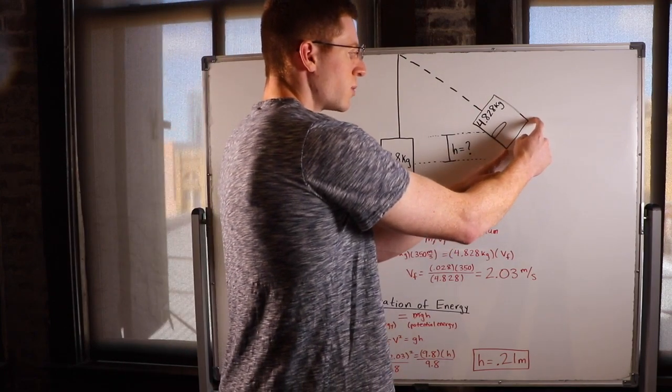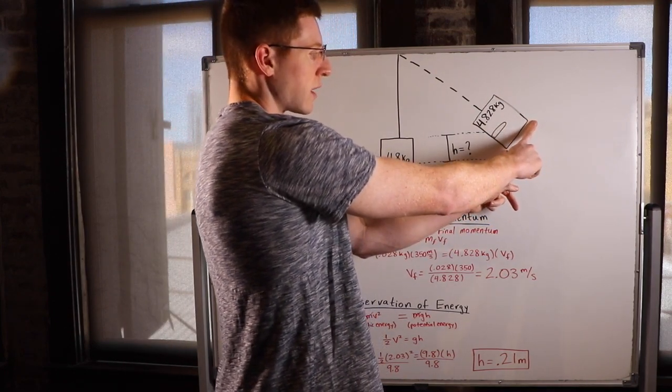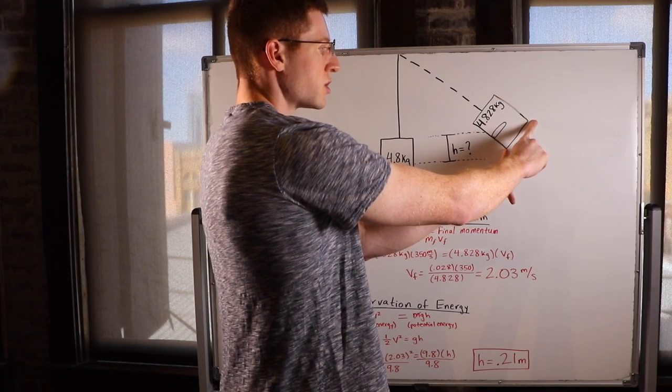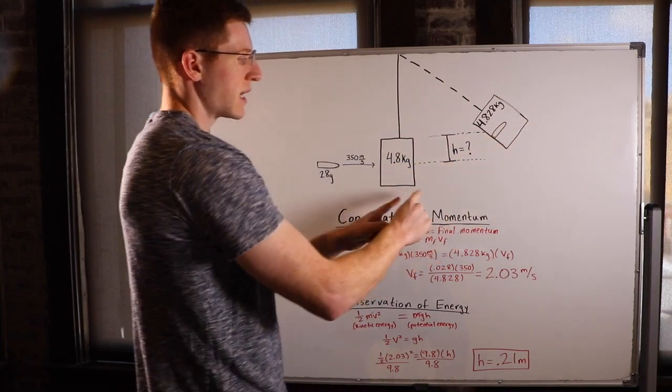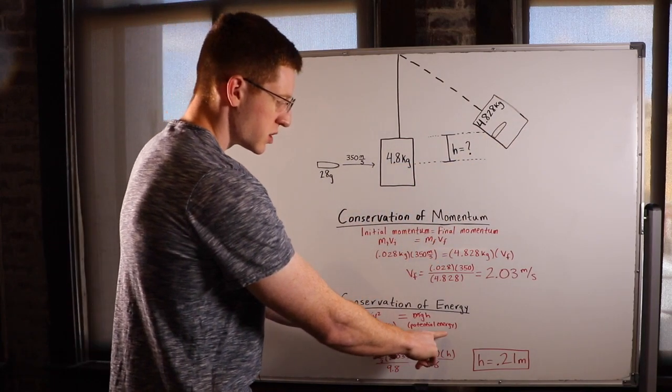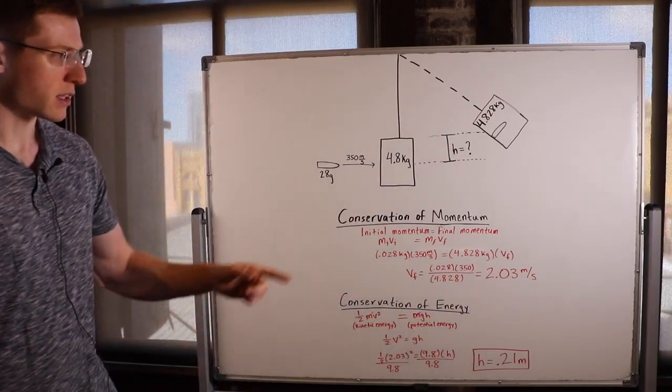But then once we get to the top of this swing here, we're no longer moving. All we have is potential energy, which means that essentially the only energy we have is the energy we can use by falling back down. So we know that all of our kinetic energy is going to be converted to all potential energy at the top of the swing.